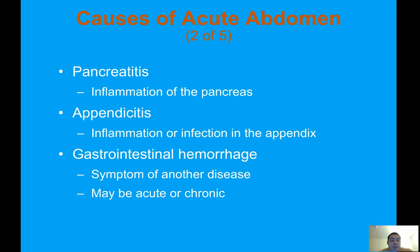Gastrointestinal hemorrhage is a symptom of another disease and may be acute or chronic. An upper GI bleed may present with the patient coughing up blood — what we look for is coffee grounds emesis, which looks like coffee grounds in the patient's vomit. A lower GI bleed presents with blood in the patient's stool. Always ask about nausea, vomiting, diarrhea, and the color and smell of emesis or stool, as GI bleeds have a very distinct and foul odor.